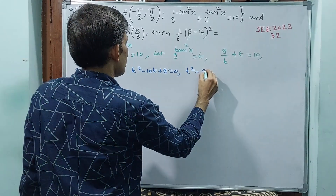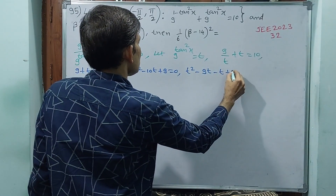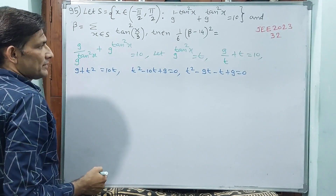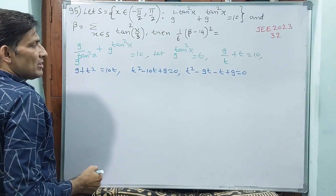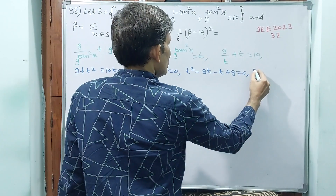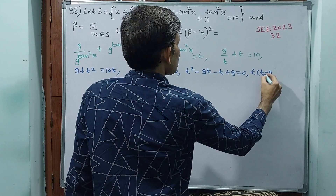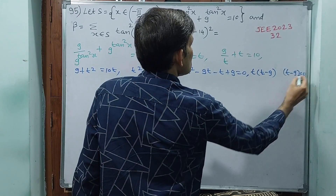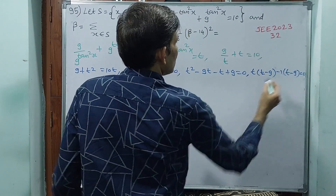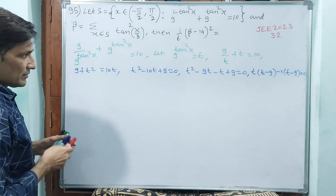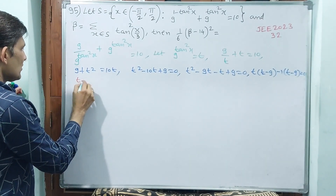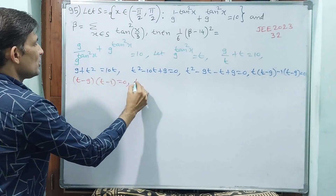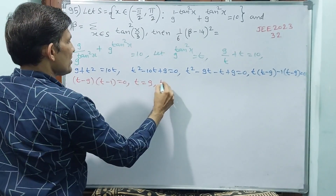So t squared minus 10t plus 9 equals 0. Factoring: t squared minus 9t minus t plus 9 equals 0, giving t minus 9 into t minus 1 equals 0. Therefore t equals 9 and t equals 1. These two values you have to take.